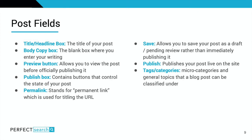The publish box contains buttons that control the state of your post — whether you want to publish, unpublish, unlist, or delete. The permalink, which stands for permanent link, is used for titling your URL. The save button allows you to save your post as a draft — don't forget to save periodically. Finally, the publish button shows your content and makes something live.